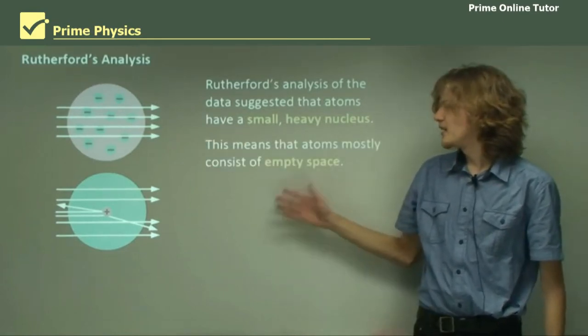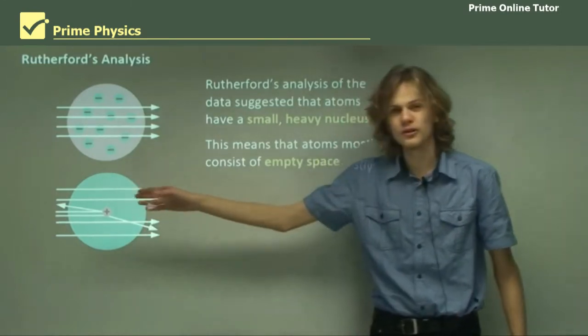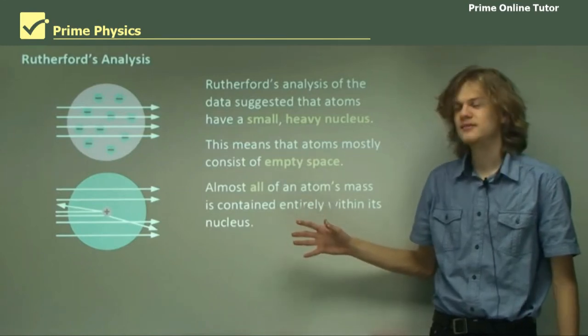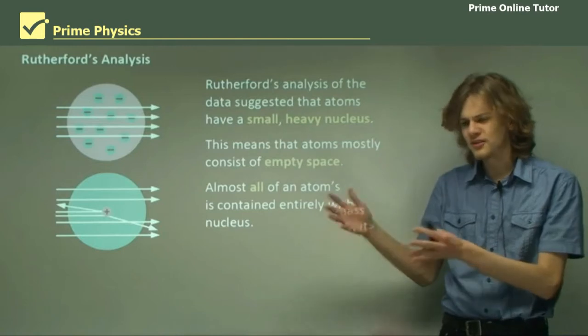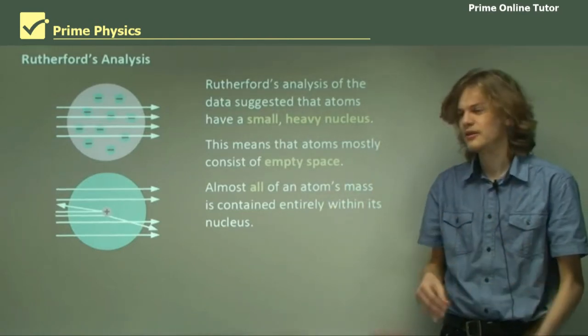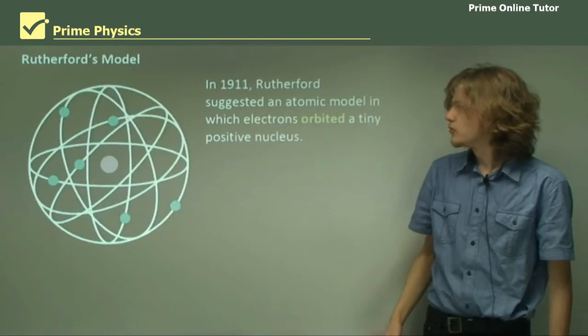This means that atoms consist mostly of empty space, which is this blue circle around the nucleus. And almost all of an atom's mass, something like 99.999 and so on percent of it, is concentrated right at the nucleus. There's almost nothing in the rest of the atom.